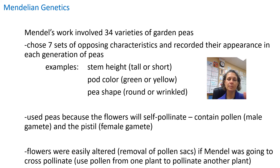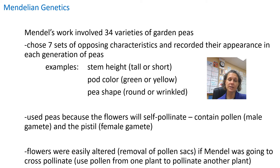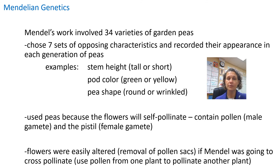Plants are pretty easy to manipulate. When pea plants produce a flower, that is basically where the fruit or seeds will develop. With peas, these flowers will self-pollinate — they have both male and female gametes in one flower, so they can fertilize themselves and essentially reproduce clones. That makes it easier to get a purebred. The flowers are also easily altered — you can remove the pollen sac, the male gamete, so they can't self-fertilize, making it easier to cross-pollinate and transfer pollen from one plant to another for genetic results.